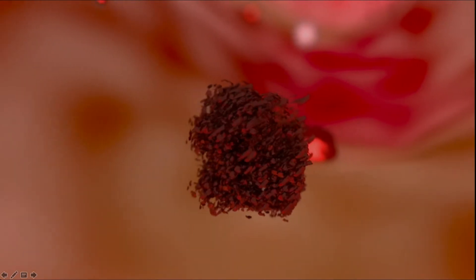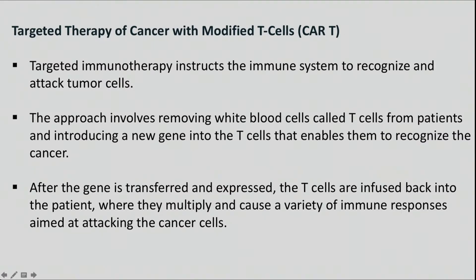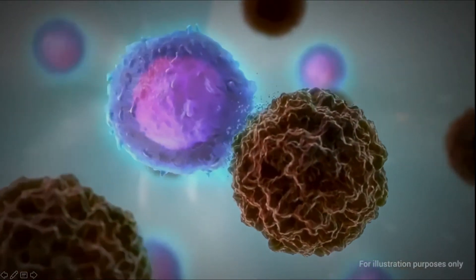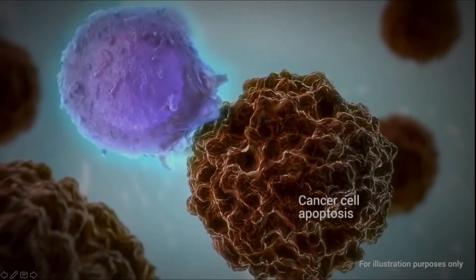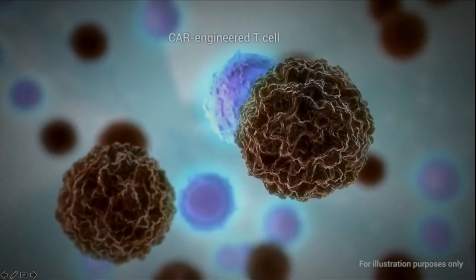That's the innate technique we all have. Now, many pharmaceutical companies are investigating something called CAR-T. This involves removing white blood cells called T-cells from patients and introducing a new gene into the T-cells that enables them to recognize the cancer. After the gene is transferred and expressed, the T-cells are then infused back into the patient, where hopefully they start to attack the cancer — again causing the destruction of the cancer cell.